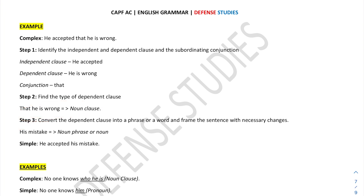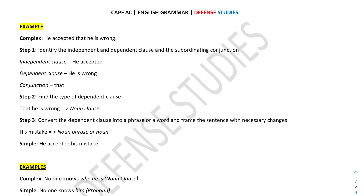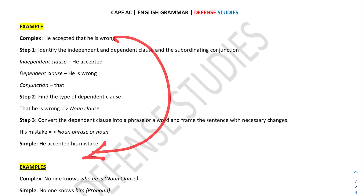In step three, we convert the dependent clause into a phrase or word. I converted the noun clause 'that he is wrong' into the noun phrase 'his mistake'. So the simple sentence becomes: 'He accepted his mistake.' This is the conversion of the complex sentence into a simple sentence.